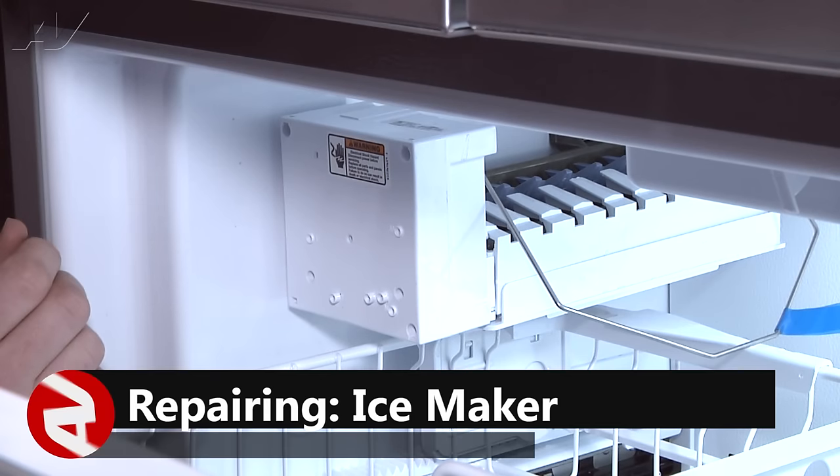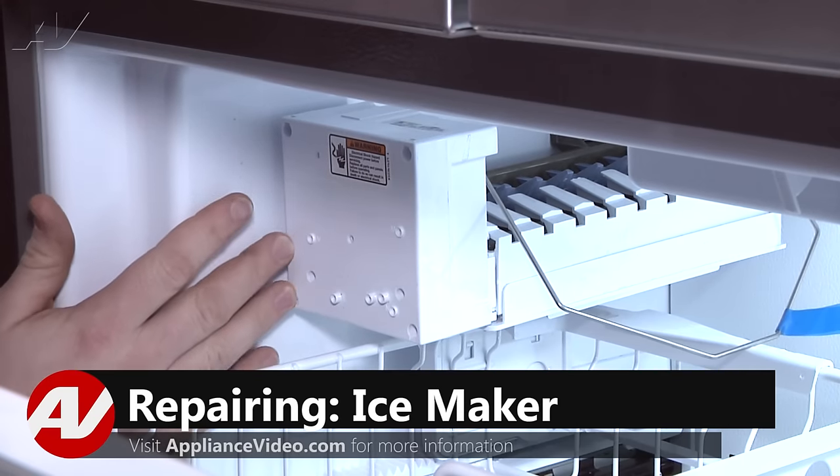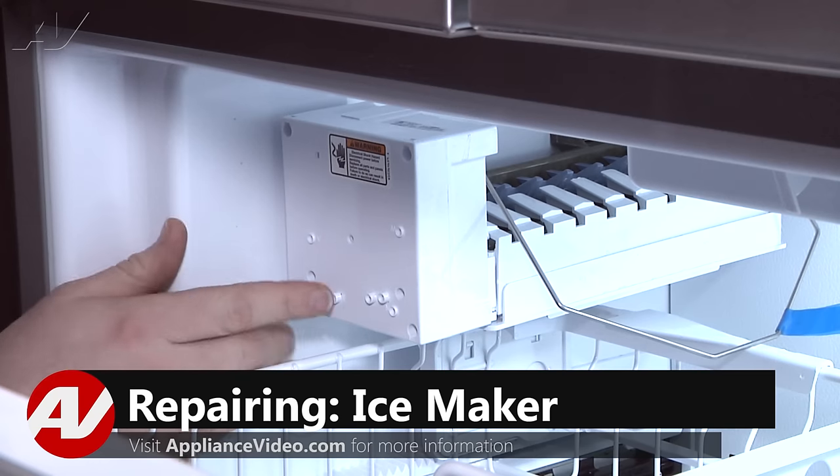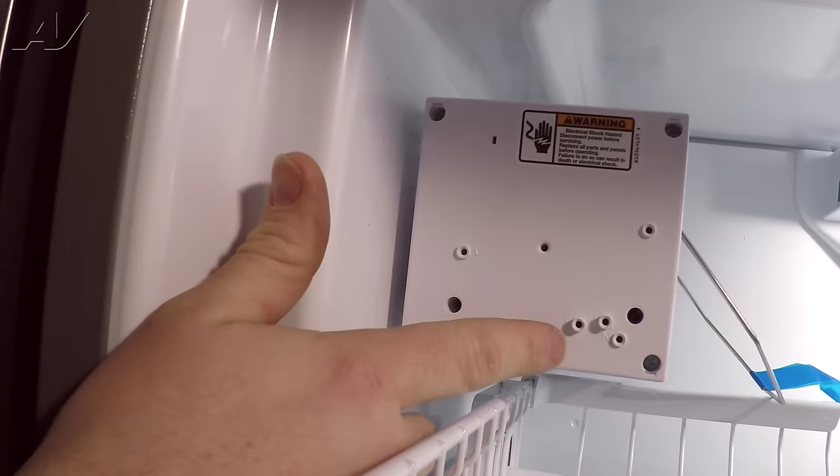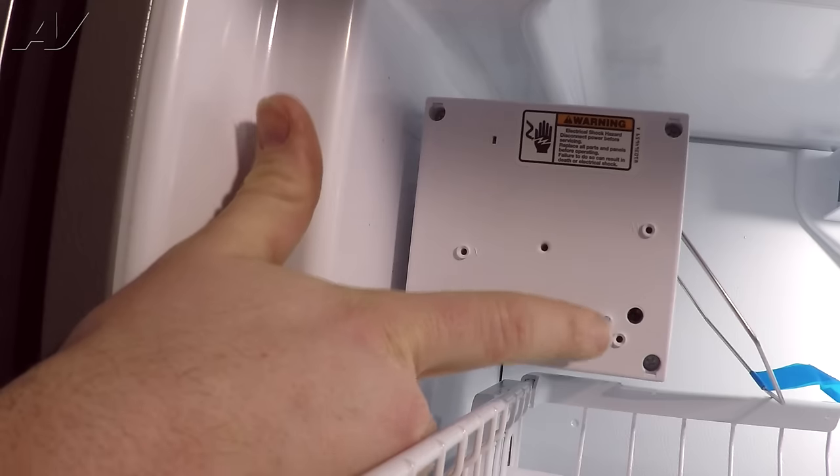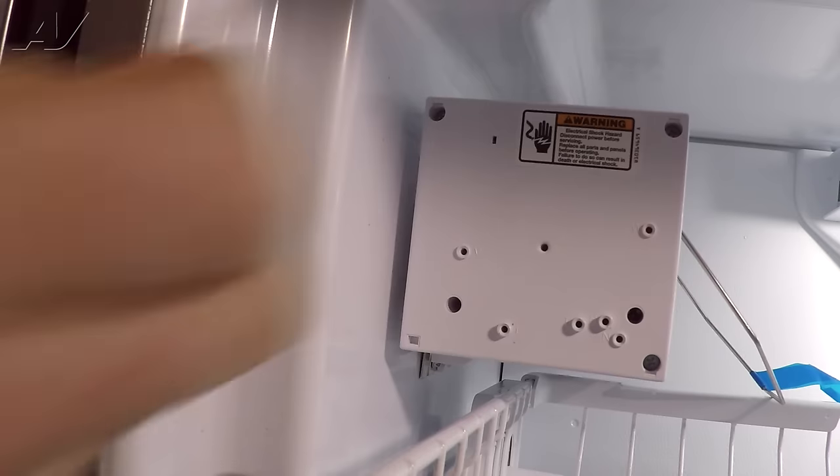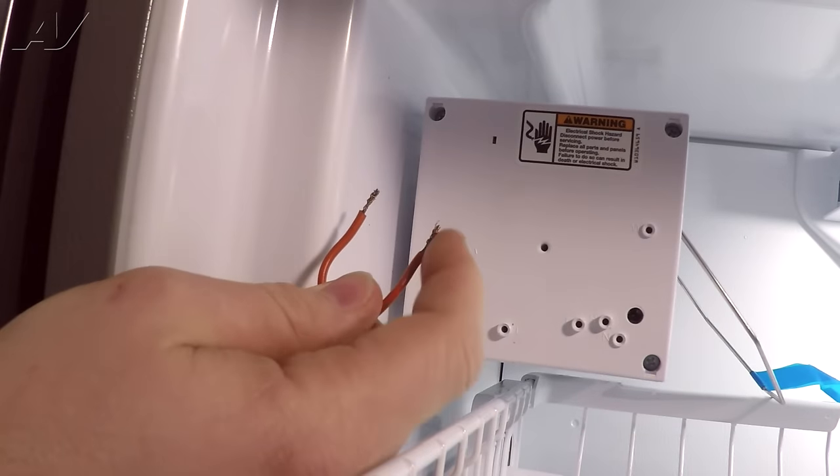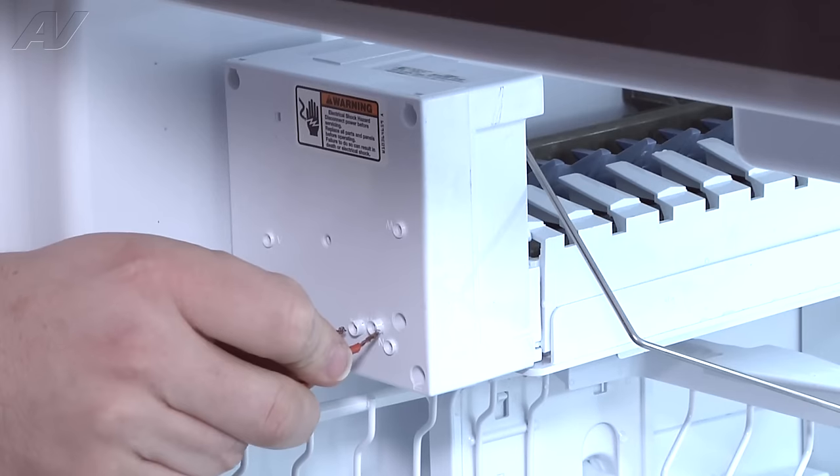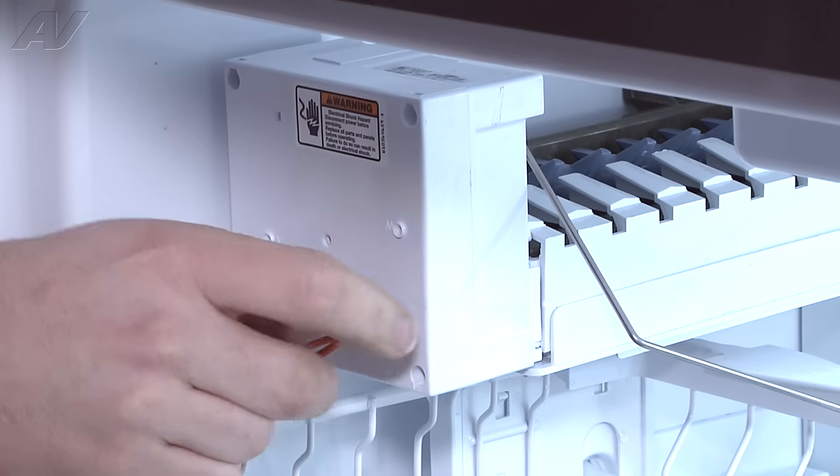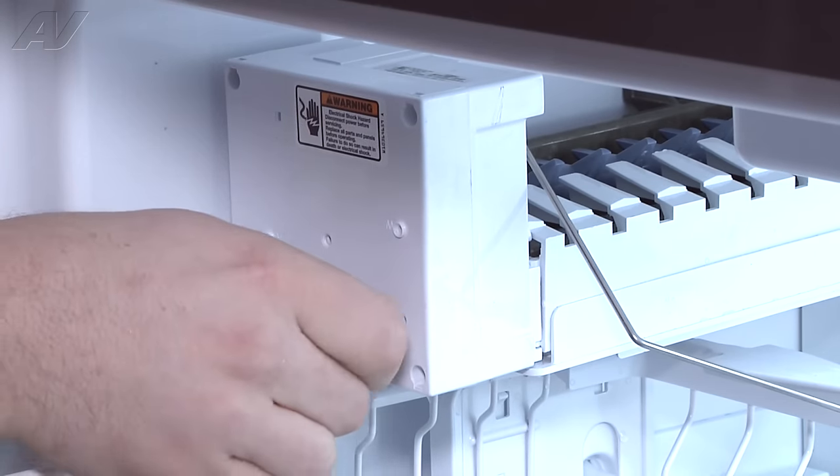To manually cycle the ice maker through a test cycle, we're going to need to use a jumper wire. We're going to be going from the T terminal and the H terminal, these two holes here. We're going to insert a jumper wire that's stripped back about a half of an inch so we can get good contact.